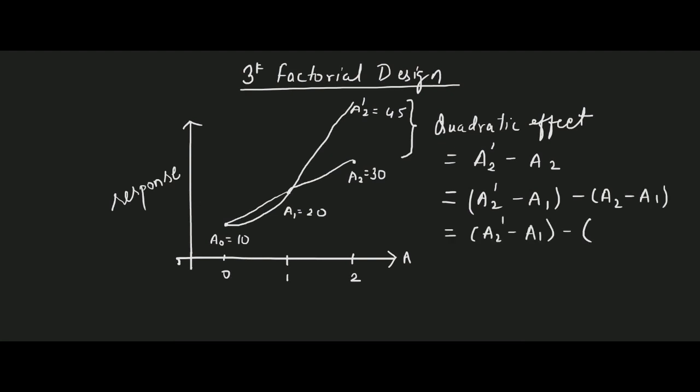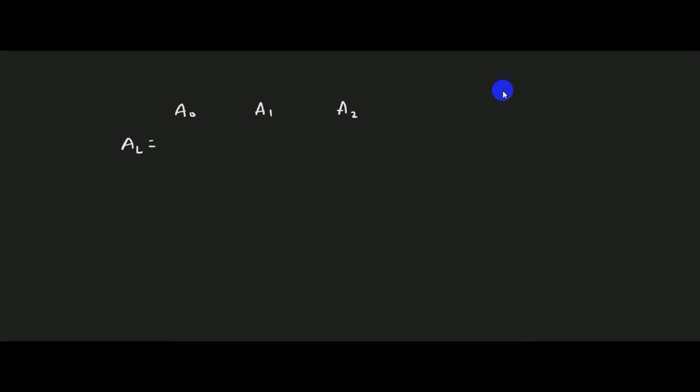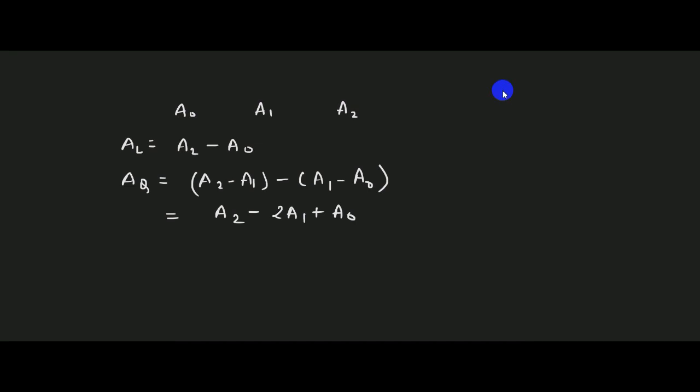Now if you notice, a2 minus a1 is equal to a1 minus a0. Therefore, in three level factorial design, if a0, a1, and a2 represent the response made at low level, intermediate level, and high level of factor A, the linear effect of A, denoted by AL, is given by the response at high level of A minus response at low level of A. And the quadratic effect of A is given by a2 minus a1 minus (a1 minus a0), which simplifies to a2 minus 2a1 plus a0.